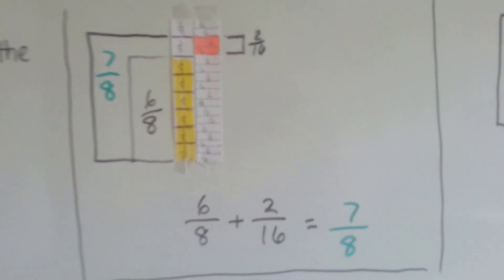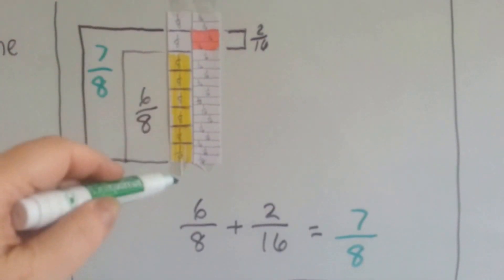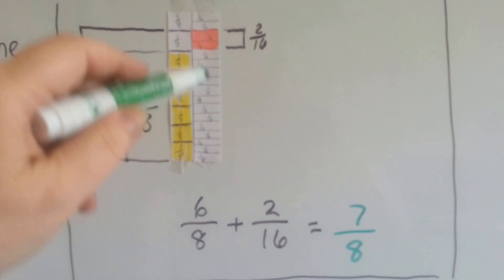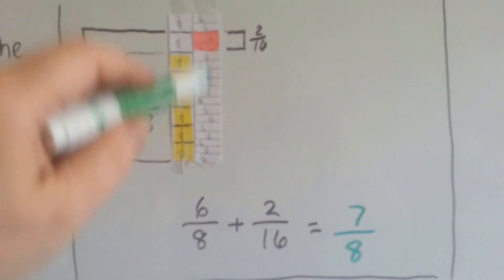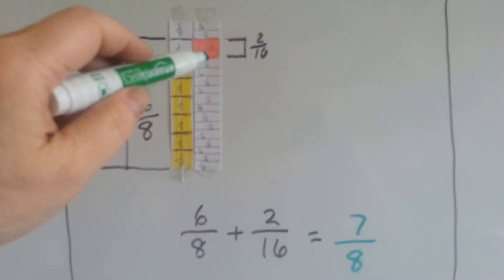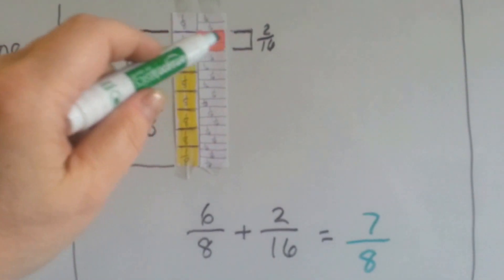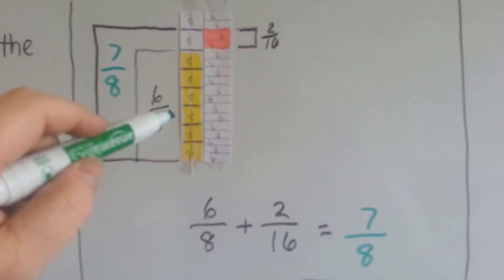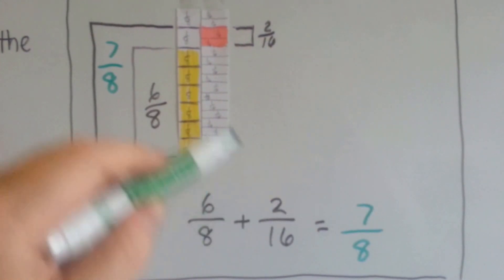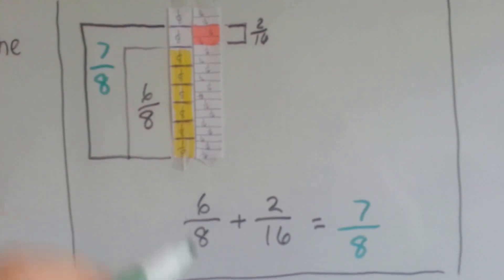Now looking at this one, I colored in the eighths units and the sixteenths units. Six of the eighths units are colored in and two-sixteenths are colored in. When I lay them next to each other, I can see they line up perfectly so that six-eighths plus two-sixteenths would be seven-eighths.